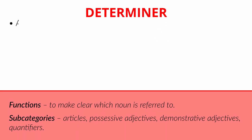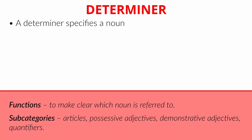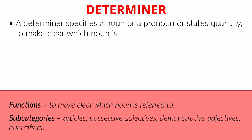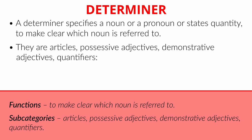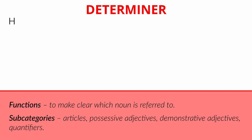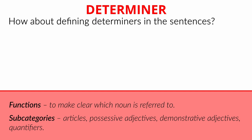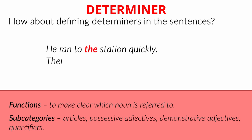Determiner. A determiner specifies a noun or a pronoun, or states quantity to make clear which noun is referred to. They are articles, possessive adjectives, demonstrative adjectives, quantifiers. For example: the, these, my, etc. How about defining determiners in the sentences? 'He ran to the station quickly.' 'There are two cats and three mice inside.'